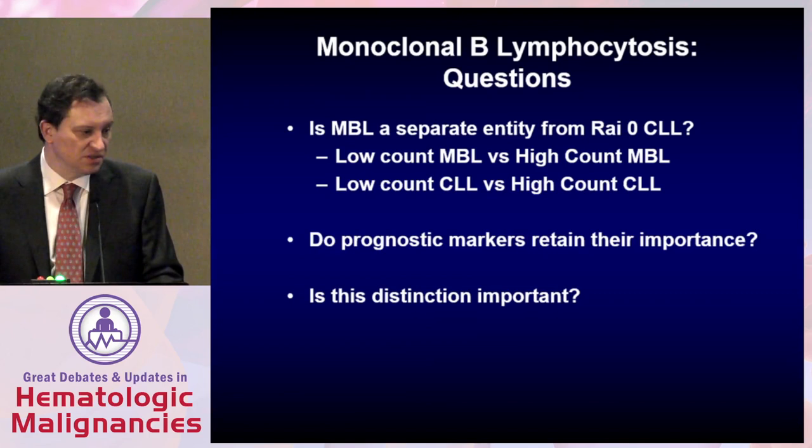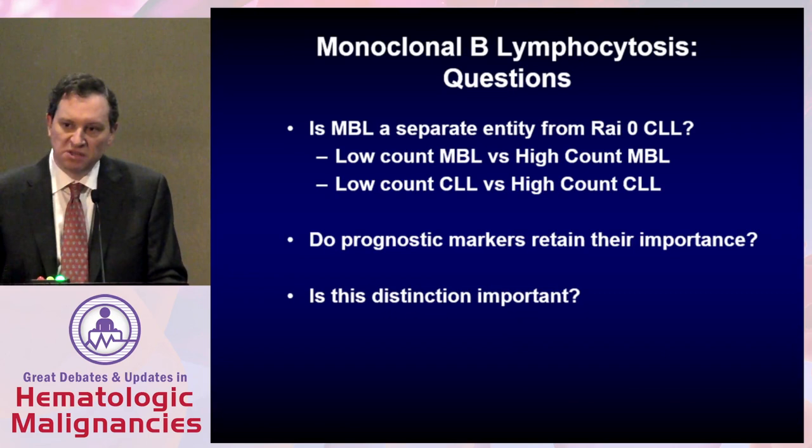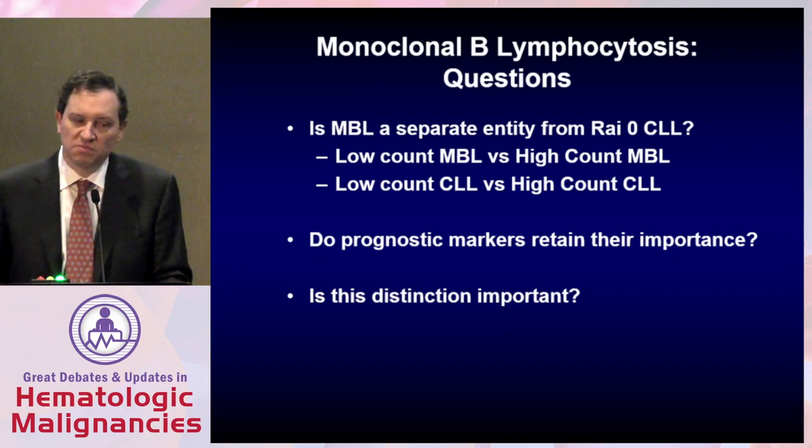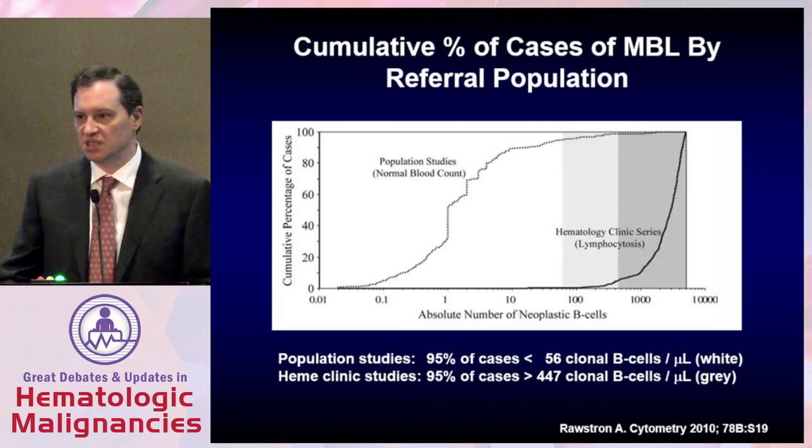What I'll speak to is the importance of various prognostic markers in indicating who's going to progress, and then the applicability of all our prognostic markers not just on the risk of progression but — more importantly — on time to treatment. That is a very important distinction to make. This is perhaps the most important slide in the entire discussion, from Andy Rostrand's original paper looking at the incidence of monoclonal B cells in the peripheral blood.